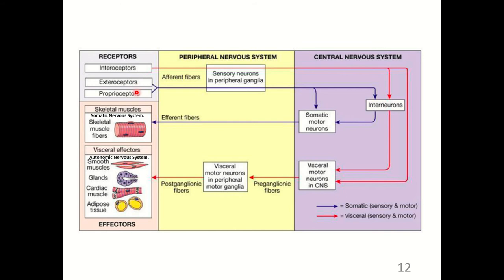Exteroceptors — responding to touch, temperature, pain, and special senses — and proprioceptors found in muscle spindle fiber cells and Golgi tendon organs travel along a somatic pathway. They synapse with interneurons in the central nervous system and travel through efferent fibers with no ganglia, going straight to skeletal muscle fibers where they initiate a rapid response.